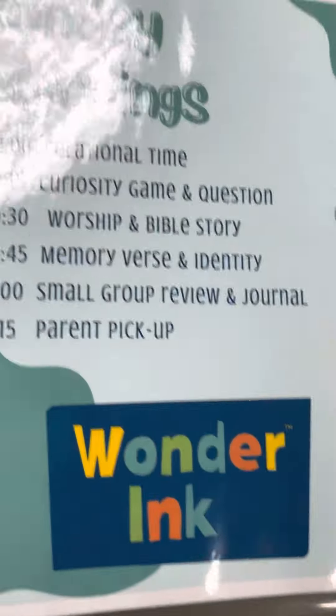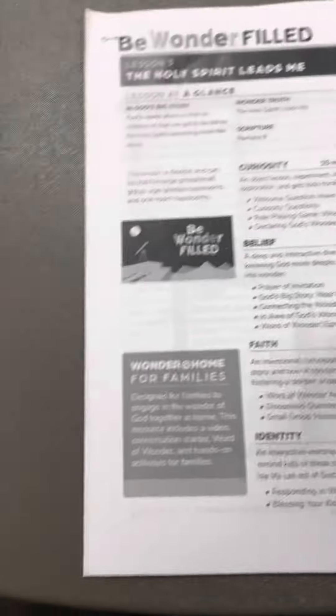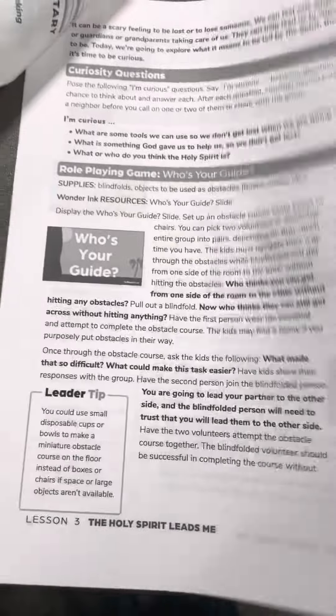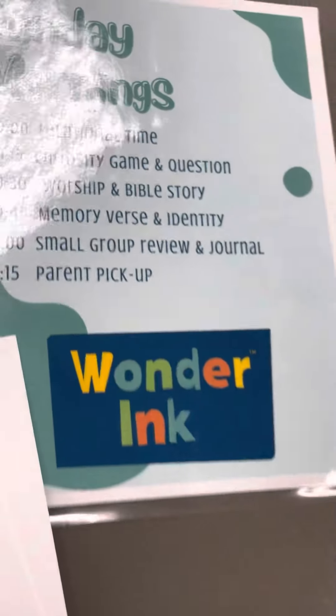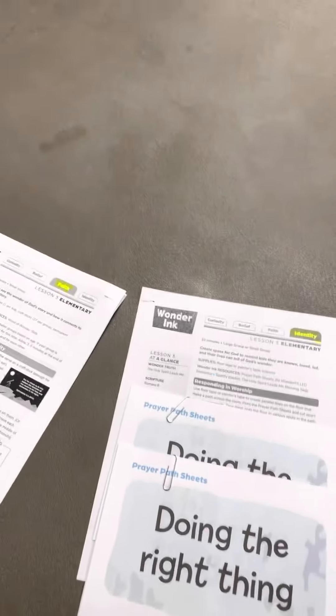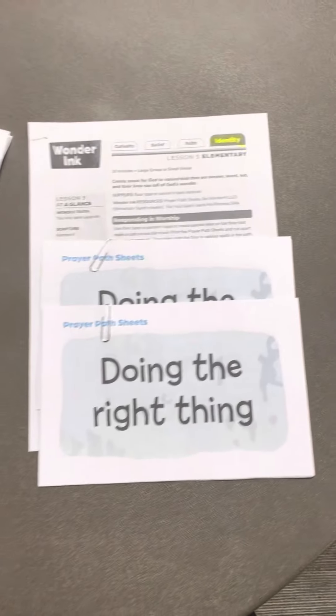Worship and Bible story: this week Heidi is going to take over. At the very top of page 7 is where the Bible starts, and she's going to teach kids about the Holy Spirit and how the Spirit leads us. Then when that's over, we have memory verse and identity time. This is what Chris Maddox is going to teach. The memory verse will be worked on in your small groups, but Chris, before they go to small groups, is going to have them find their identity in the Bible story and lead the group in that part.